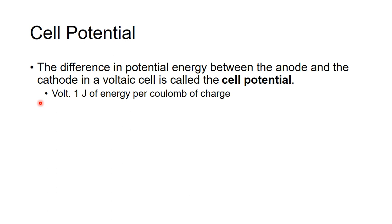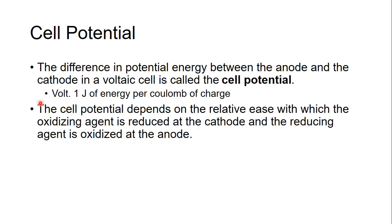And here we use our volt. A volt is just one joule of energy per coulomb of charge. The cell potential is really how much your anode wants to give an electron away and how much your cathode wants to accept that electron. The more your anode wants to give the electron away and the more your cathode wants to accept it, the bigger your cell potential.